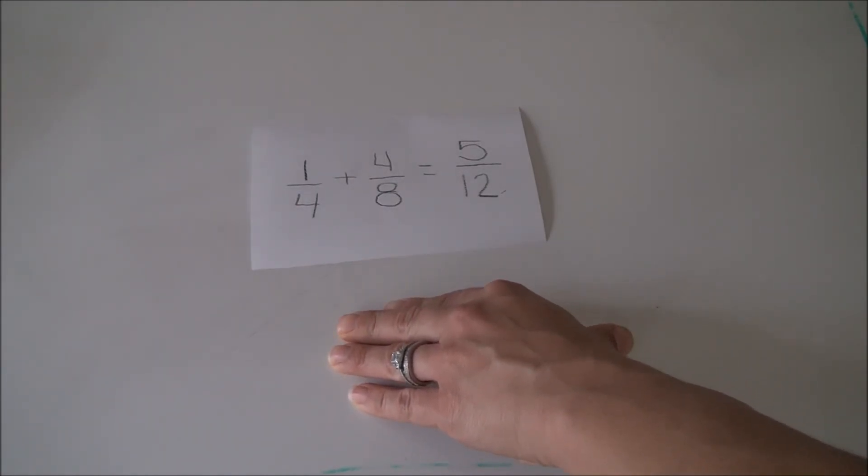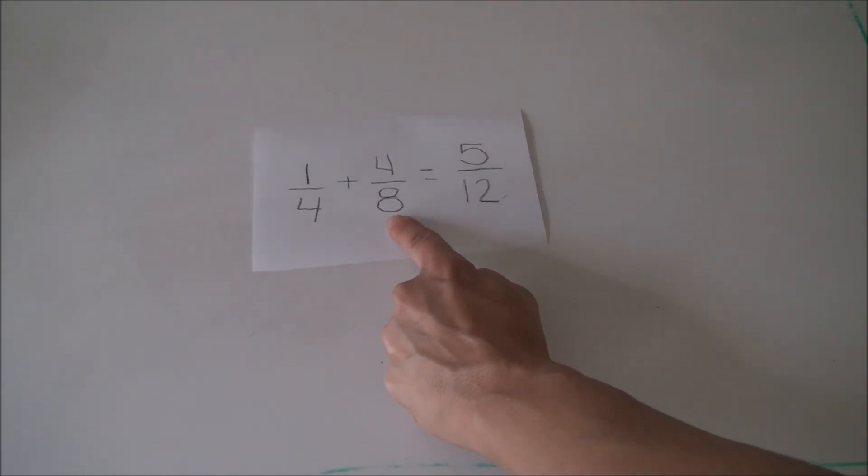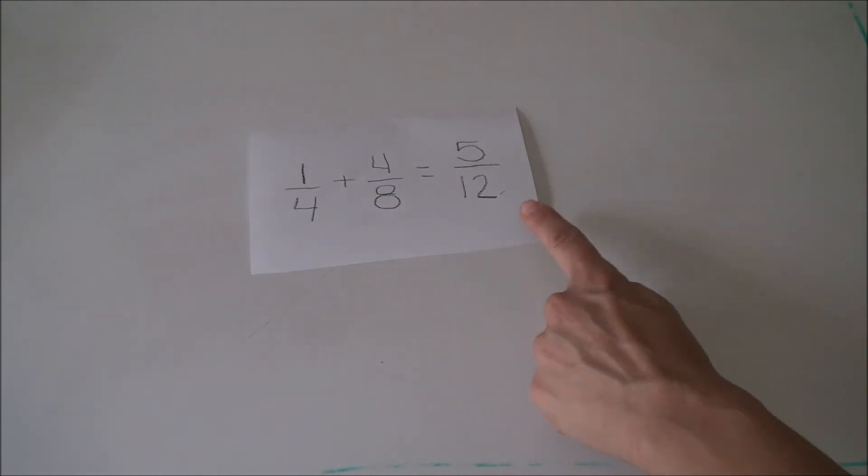Hmm. Well, this can't be right. The sum, 5/12, is less than 1/2. If one of the addends is already equal to 1/2, then that sum would have to be bigger than 1/2.